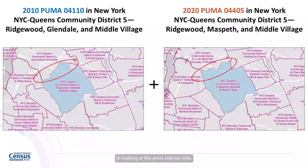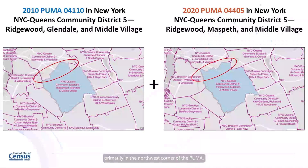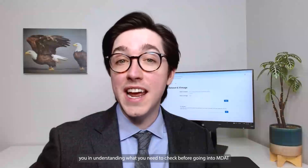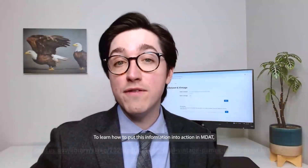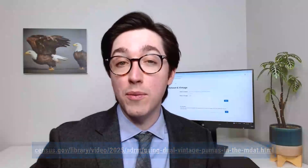In looking at the areas side by side, I can also see that there was a slight shift in the boundaries, primarily in the northwest corner of the PUMA. I'll want to keep this in mind as I find data for it. I hope this tutorial has helped you in understanding what you need to check before going into MDAT to use the 2022 ACS five-year PUMS to get data for PUMAs. To learn how to put this information into action in MDAT, please see our accompanying video at the link below. For more guidance on using MDAT, please visit our resources page at the link below. Thank you.